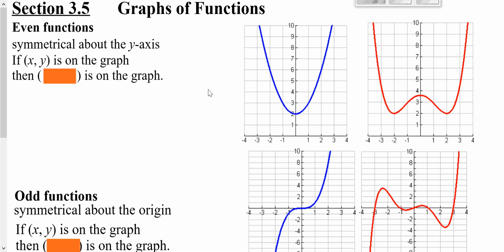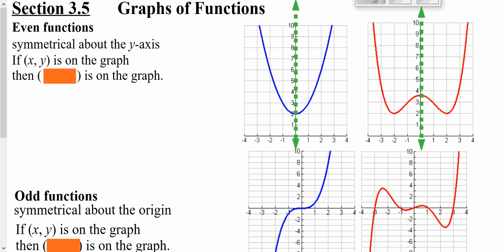Even functions are symmetrical about the y-axis. If I draw in my y-axis, each side should be the mirror image of the other one. You can see that here on these top two. Notice this point here correlates and reflects to this one here — the y's are the same, but the x's are opposite. No matter what point you try when dealing with an even function, your y's are the same and your x's are the opposite.